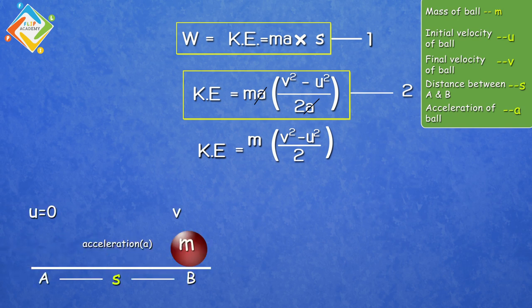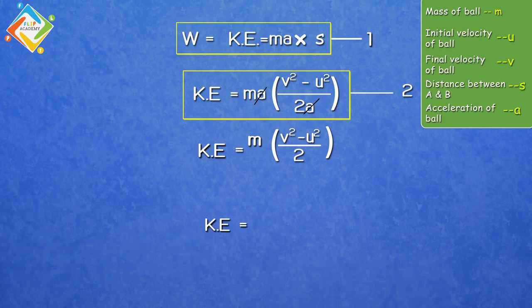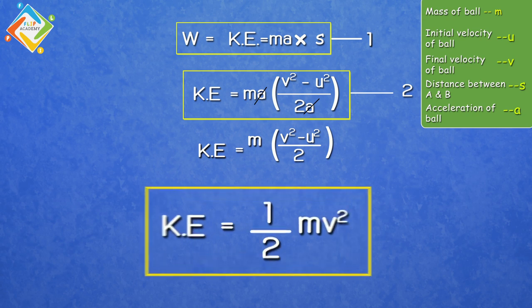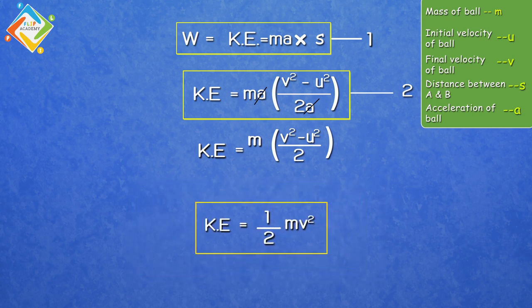In our example, the initial velocity of the ball is zero. So U becomes zero. If you put this value, the kinetic energy formula becomes half MV square. This is the formula for kinetic energy, where M represents the mass of the object and V represents the final velocity of the object.